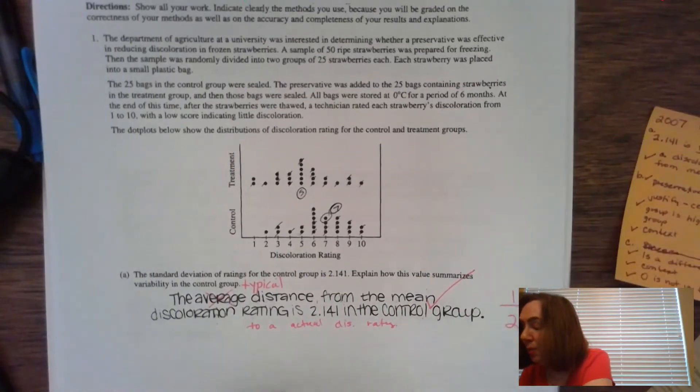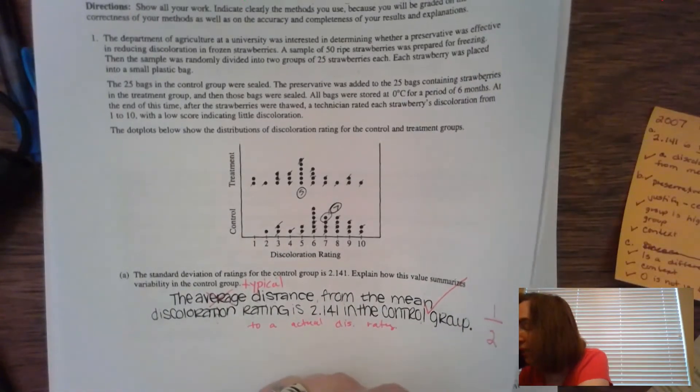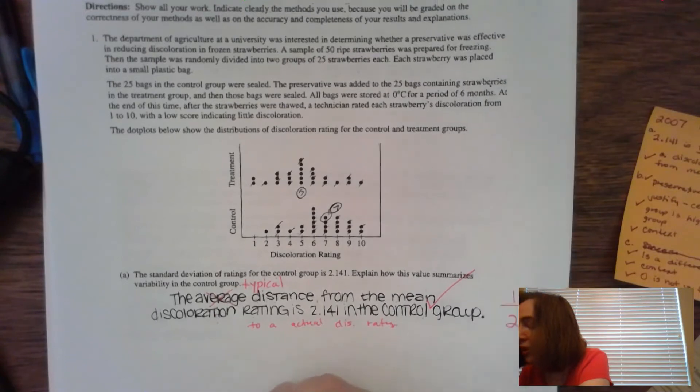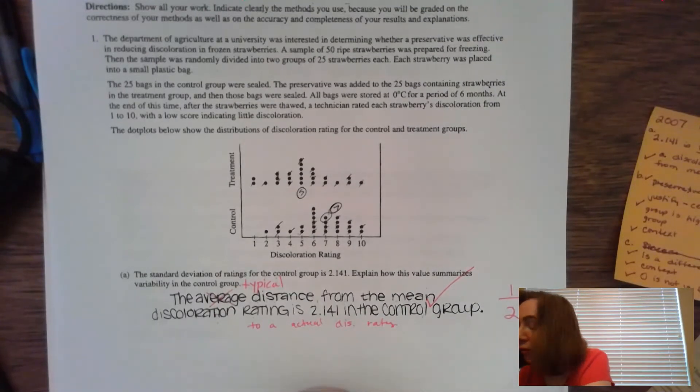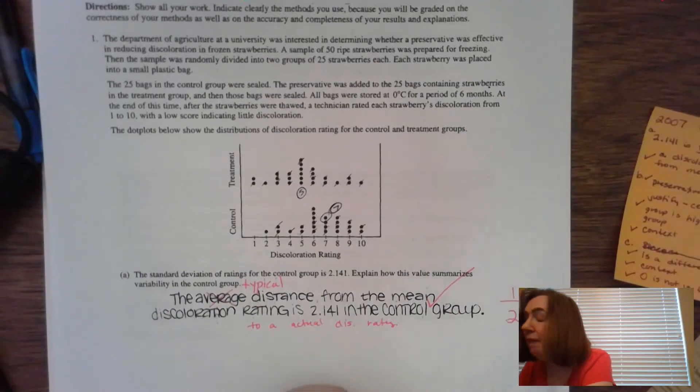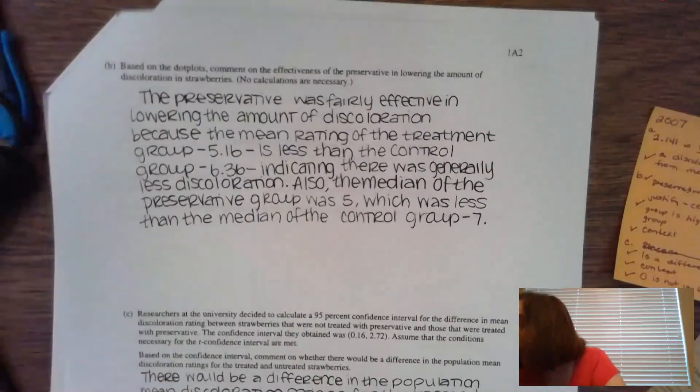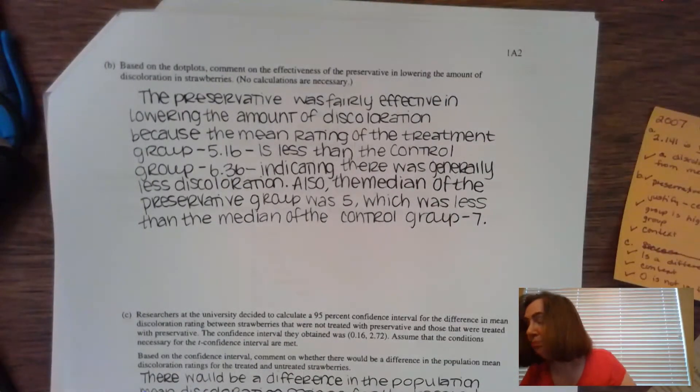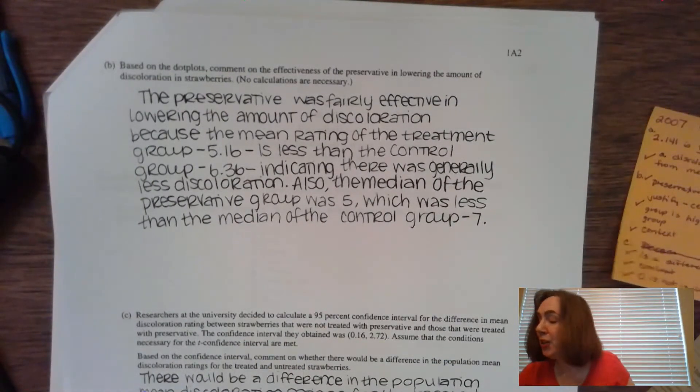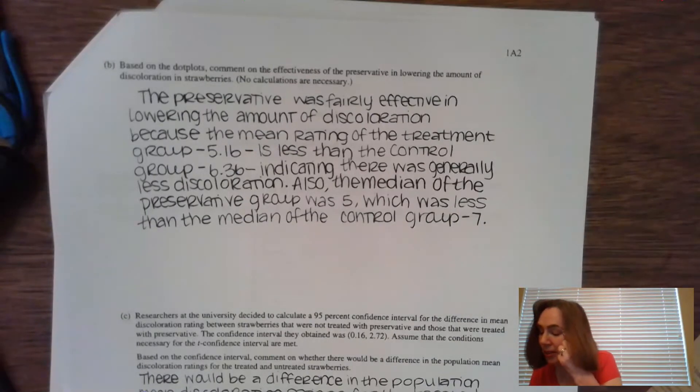So when you're working with quantitative data, the standard deviation is the typical distance between a value for whatever it is, which in this case the discoloration rating, is from its mean. So moving on to the next part B. And let's take a look at that. This is based on the dot plots. Comment on the effectiveness of the preservative in lowering the amount of discoloration.